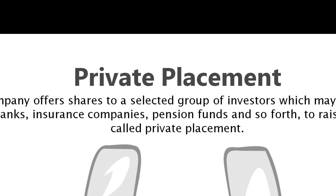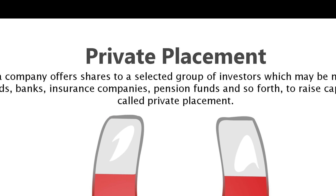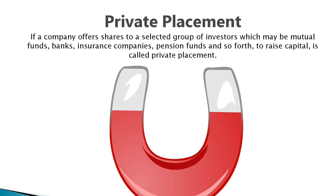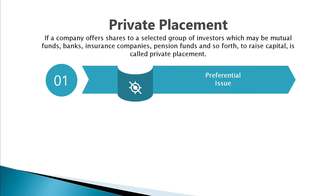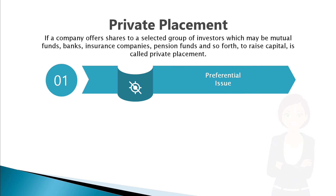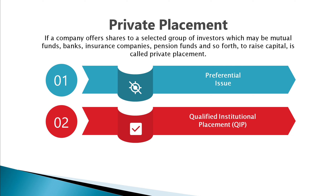Last comes private placement. If a company offers shares to a selected group of investors — which may include mutual funds, banks, insurance companies, pension funds, and so on — to raise capital, it is called a private placement. This can be done in three types. The first is a preferential issue, where a publicly listed enterprise allots shares to a selected group of investors such as individuals, venture capitalists, or insurance and mutual fund companies on a preferential basis.